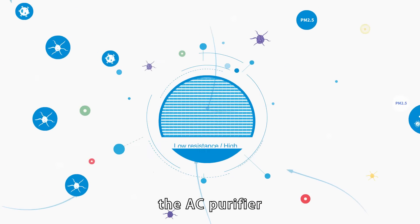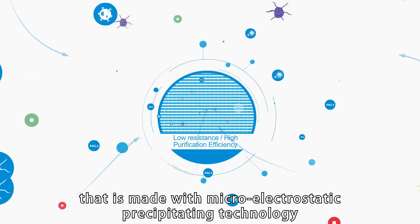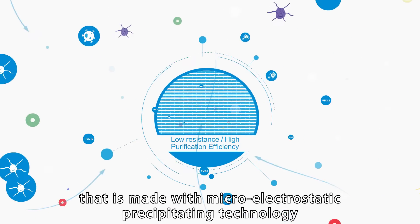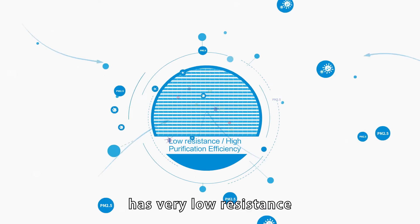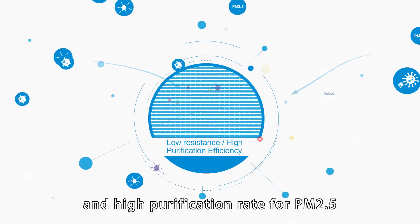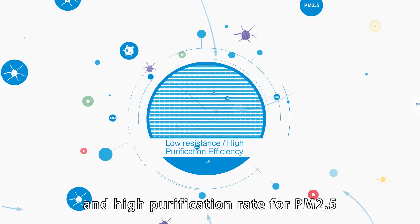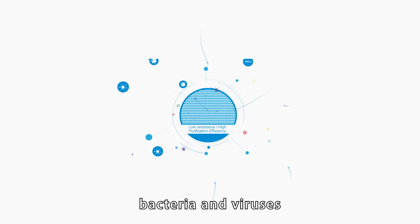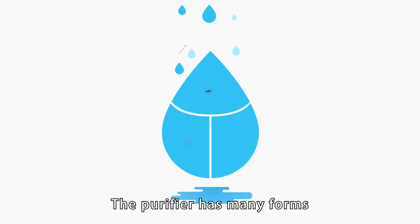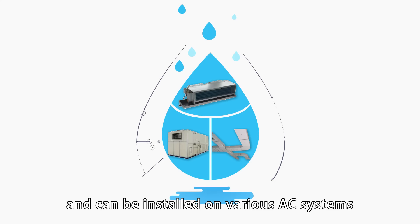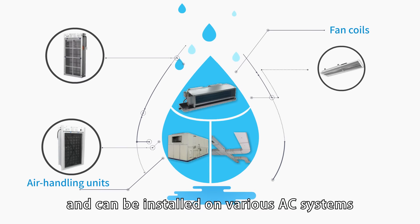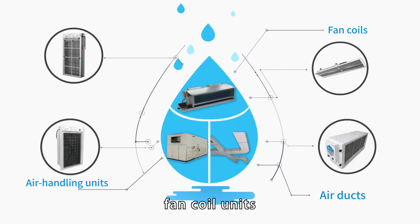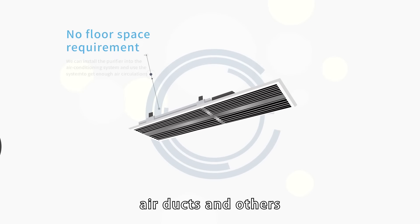The AC purifier is made with micro-electrostatic precipitating technology, which has very low resistance and a high purification rate for PM2.5, bacteria, and viruses. The purifier has many forms and can be installed on various AC systems such as air handling units, fan coil units, air ducts, and others.